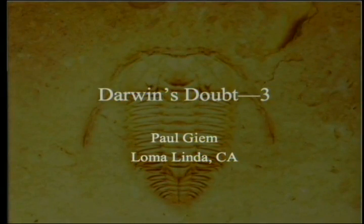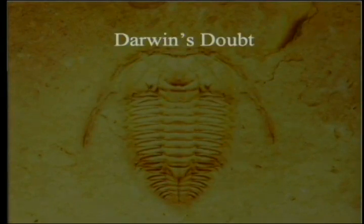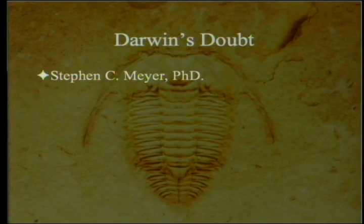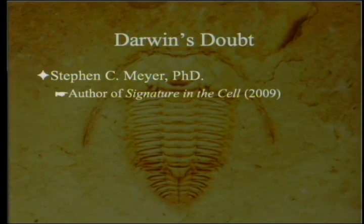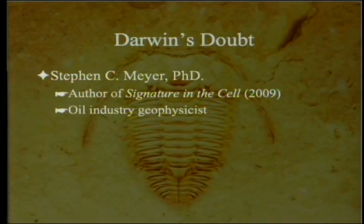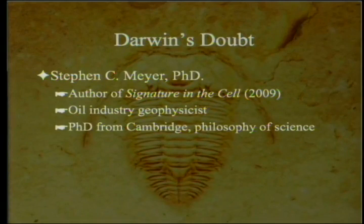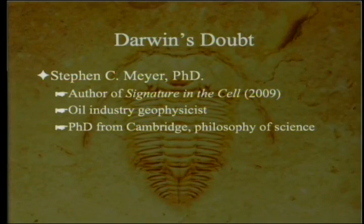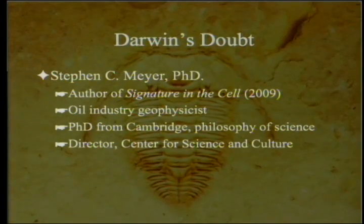Darwin's Doubt, part three. We have been going through the book Darwin's Doubt, written by Stephen C. Meyer, author of Signature in the Cell. He got his master's in geology and was doing geophysics for the oil industry when he got interested in the origin of life, then went and got his PhD from Cambridge in philosophy. He is currently the director for the Center for Science and Culture at the Discovery Institute.